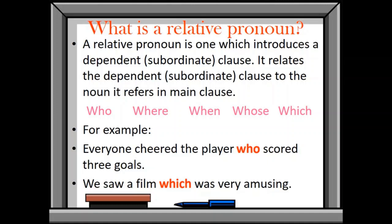Look at the examples below. Everyone cheered the player. It is the main clause. Who scored three goals. Now, who is the relative pronoun. Scored three goals. These are subordinate clause. So here this relative pronoun is going to give us information about the player that is present in the main clause. We saw a film which was very amusing. Here which is a relative pronoun and it is giving us information about film.